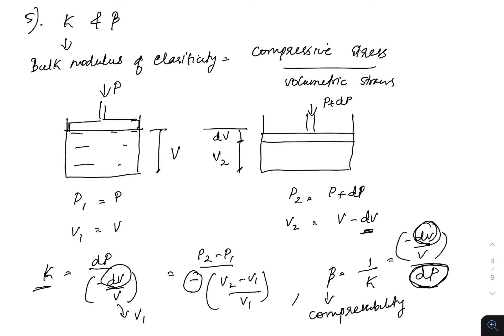The next properties are bulk modulus K and compressibility β. Bulk modulus of elasticity is compressive stress divided by volumetric strain, which we studied in mechanics of solids. Consider a container with fluid; we apply pressure through a piston with initial pressure P₁ = P and initial volume V₁ = V.